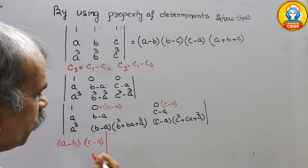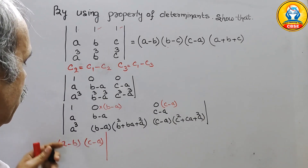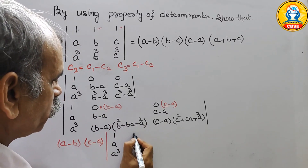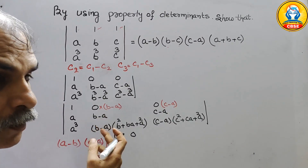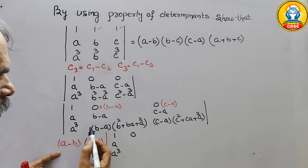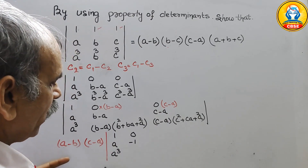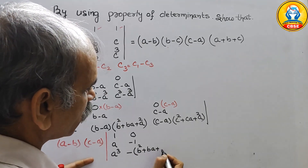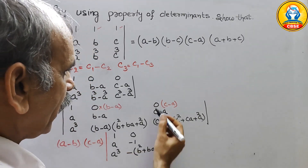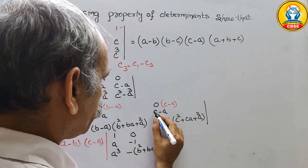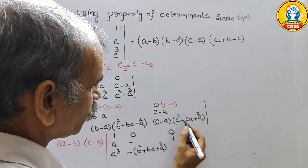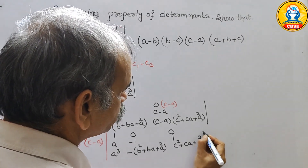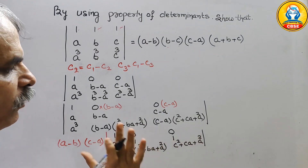After factoring out (a minus b) and (c minus a), the remaining determinant has: first column 1, a, a³; second column 0, minus 1, minus(b² plus ba plus a²); third column 0, 1, (c² plus ca plus a²).